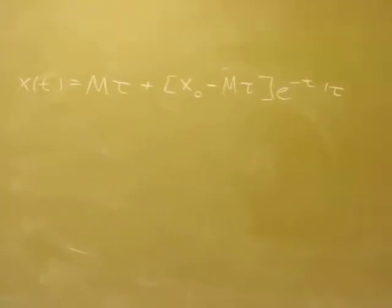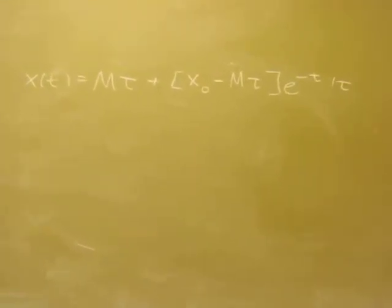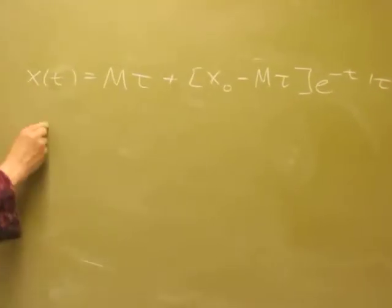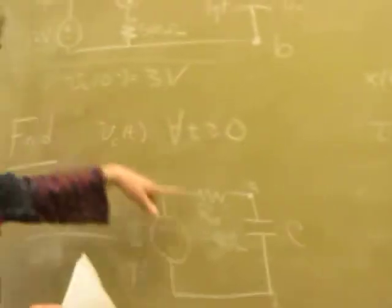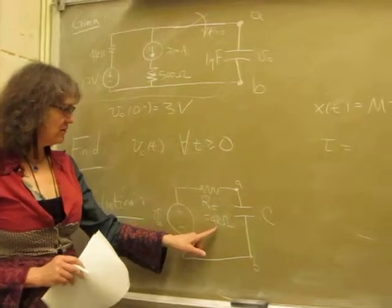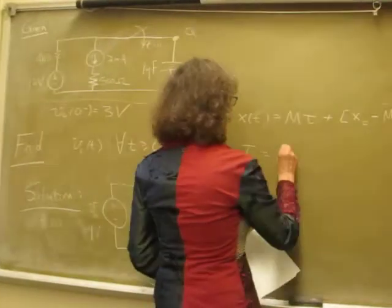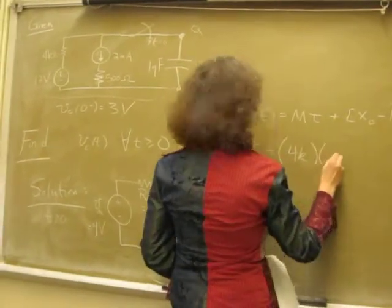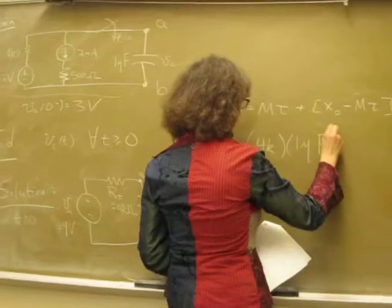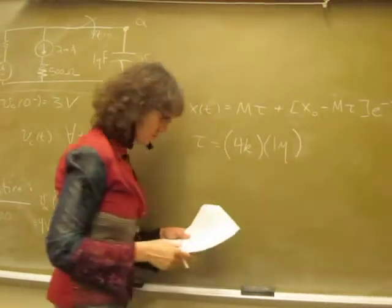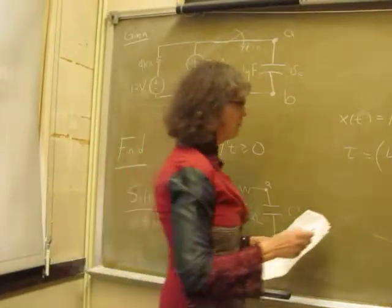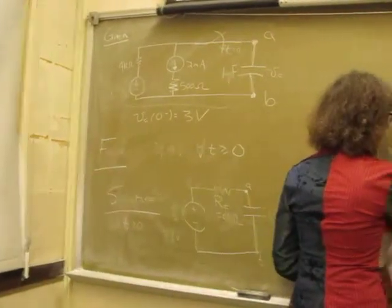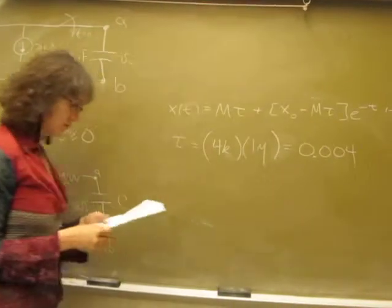All we have to do is figure out what M is, what X₀ is, what X∞ is, and what τ is. Tau is simple enough - it's just RC. R is the Thevenin resistance, 4 kilo-ohms, and C was 1 microfarad. Using metric prefixes, that equals 0.004, so τ is 0.004.